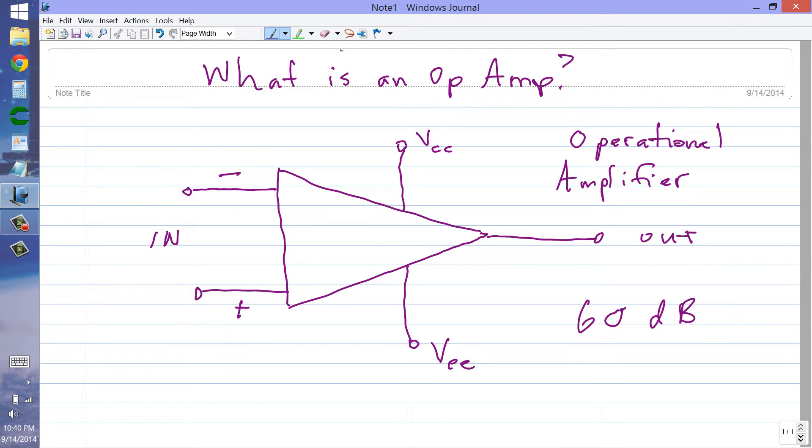But what you'll see when you see the symbols here, it's kind of like a triangle, like an isosceles triangle with the apex pointing towards the right. That's the output.